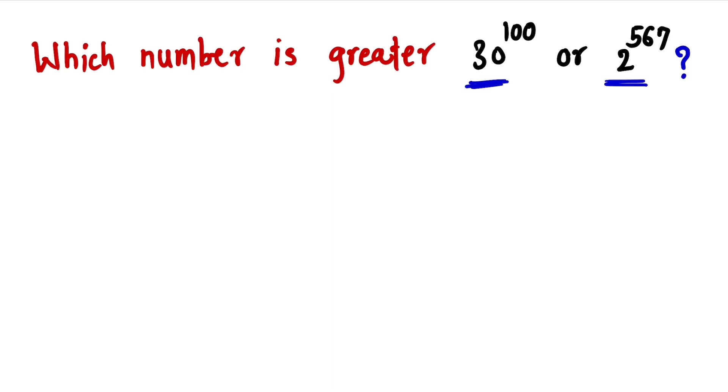Now a number which is close to 30 and which is a power of 2 is clearly 32. Because 32 is 2 raise to 5. And now this is our hint number 1.